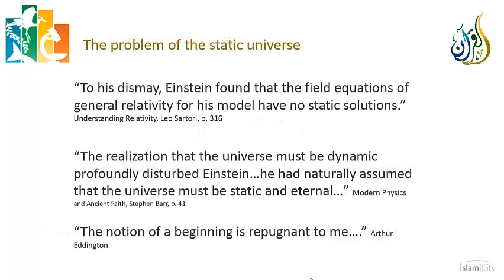However, there was a problem. The problem is—when Einstein developed these equations, let me just quote to you directly from Professor Leo Sartori's book 'Understanding Relativity'—'To his dismay, Einstein found that the field equations of general relativity have no static solutions.' What does that mean? That means that although all scientists, including Einstein, thought that the universe was fixed and eternal and unchanging, his equation said no—the universe could not be that. It either had to be expanding or contracting. Again, from Professor Steven Barr's book 'Modern Physics and Ancient Faith': 'The realization that the universe must be dynamic profoundly disturbed Einstein. He had naturally assumed that the universe must be static and eternal.'